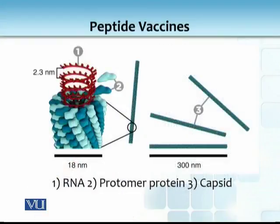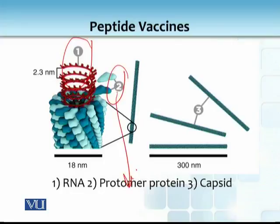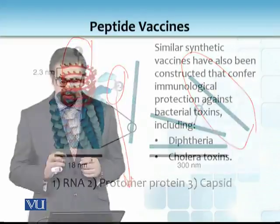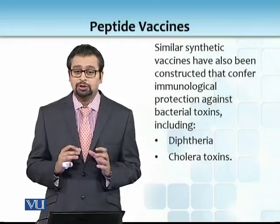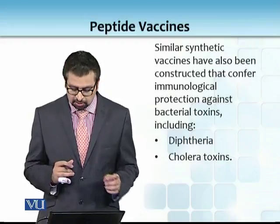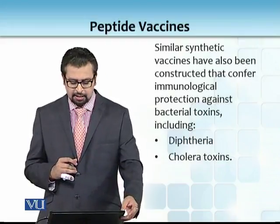Is ke khilaf jab use kiya gaya to ultimately they saw that it can confer limited immunological protection against subsequent administration of the intact virus. So it was amazing ke sirf 6 amino acid long structure se bhi ultimately they could get an immune response. In this particular image you see our tobacco mosaic virus, jis mein obviously this is RNA and this is what we call protomer protein. Similarly, different synthetic vaccines have also been constructed that confer immunological protection against bacterial toxins including diphtheria and cholera.